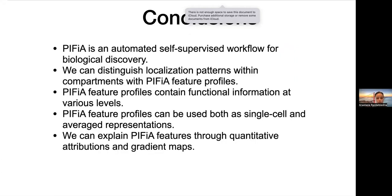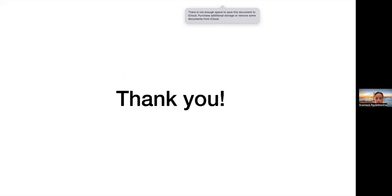To wrap up: I presented PFIA, an automated self-supervised workflow for biological discovery. PFIA can distinguish different localization patterns, including patterns within compartments. PFIA feature profiles contain functional information that can uncover biology at various levels, usable both as average and single-cell feature profiles. Finally, we introduced two ways — quantitative logistic regression coefficients and gradient attribution maps — to interpret what each individual feature of PFIA means. A big thanks to my supervisor and everyone who contributed to and listened to this work.